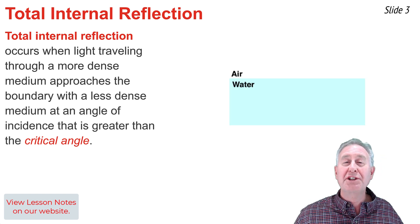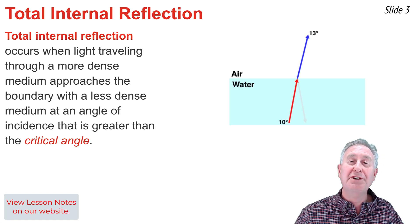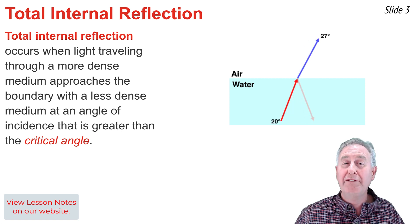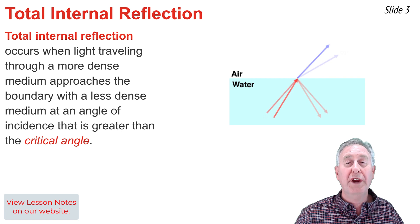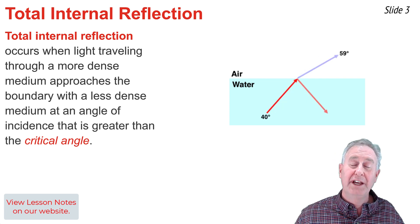Total internal reflection is the phenomenon that occurs when light is in a more dense material and traveling towards the boundary with a less dense material with an angle of incidence greater than the so-called critical angle.